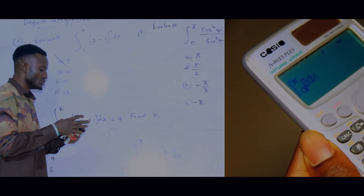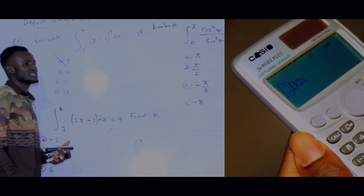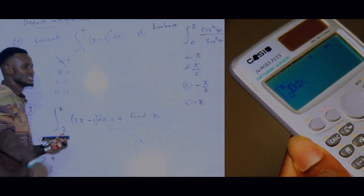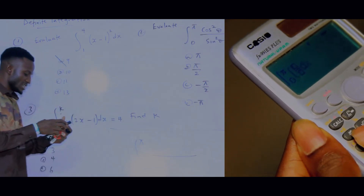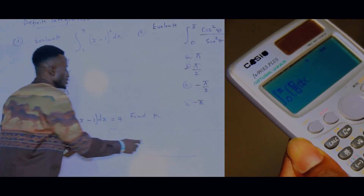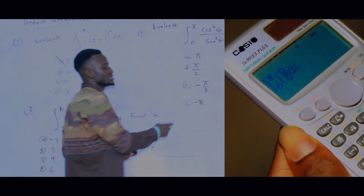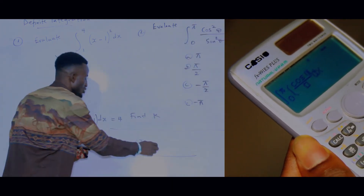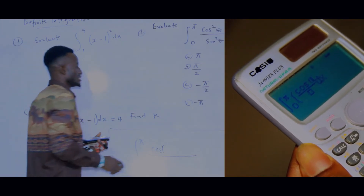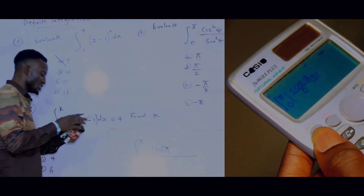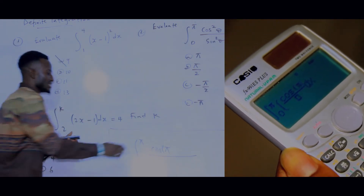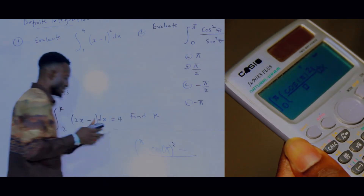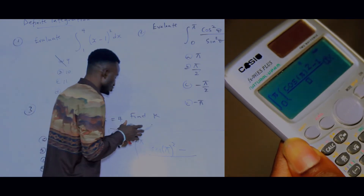Then come to the middle input area. The integrand involves a fraction, so press the fraction button. In the numerator you have cos²(θ), substituting theta with pi — so press cos, which opens a bracket, then press pi (Shift + 10^x), close the bracket, then press square. Then press minus 1.